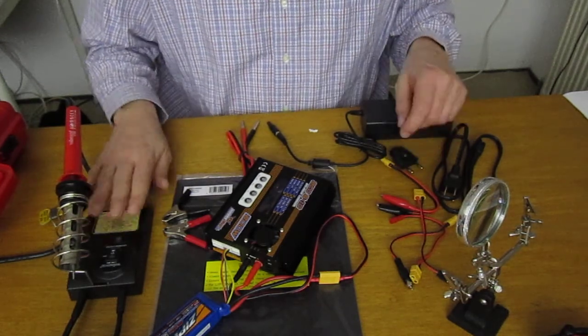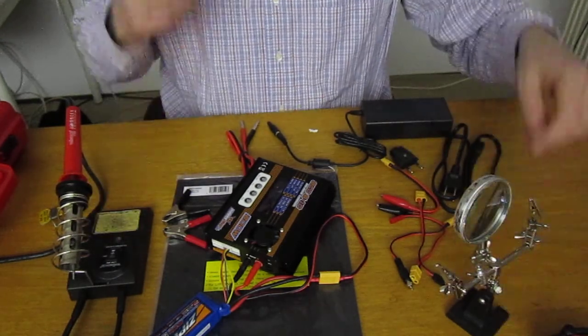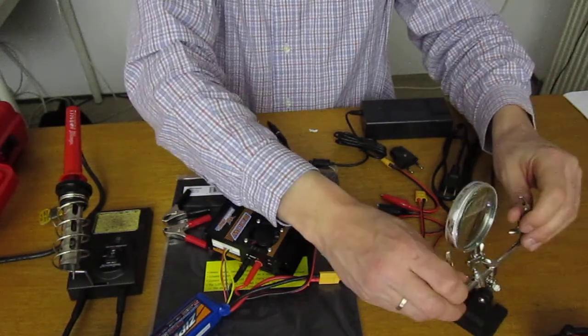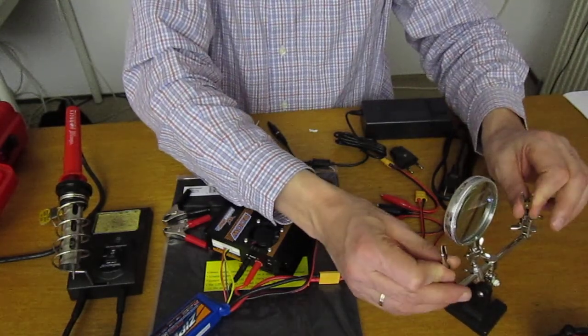This is my soldering iron. And in case I can't see well, I can use this magnifying glass in these small hands.